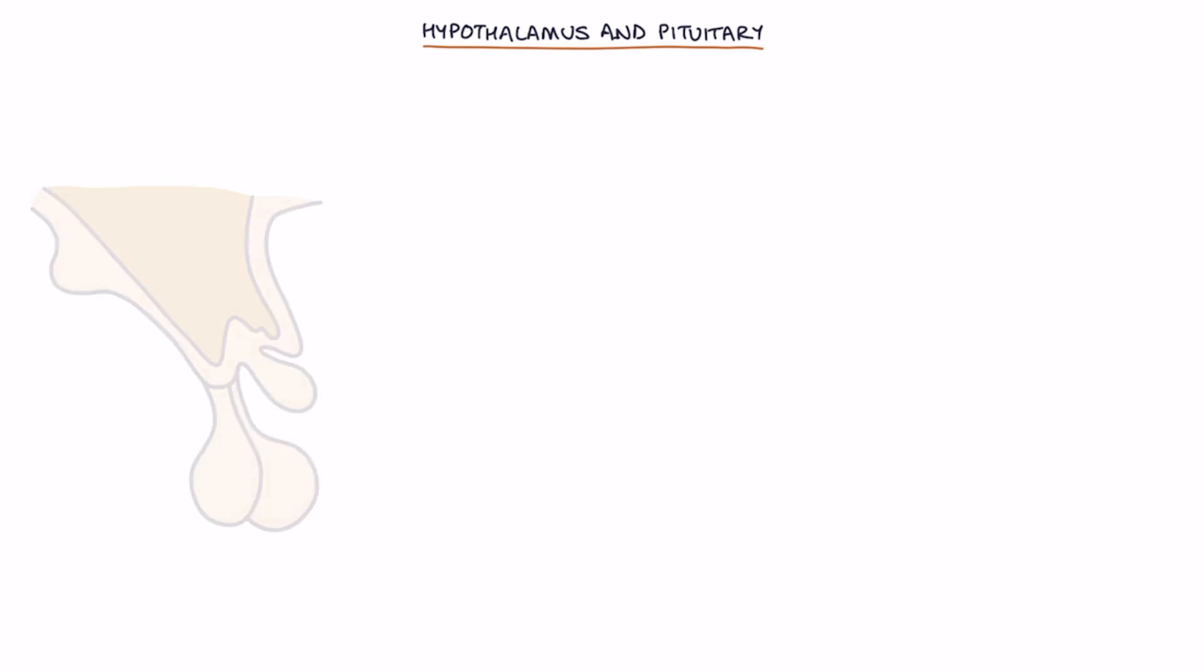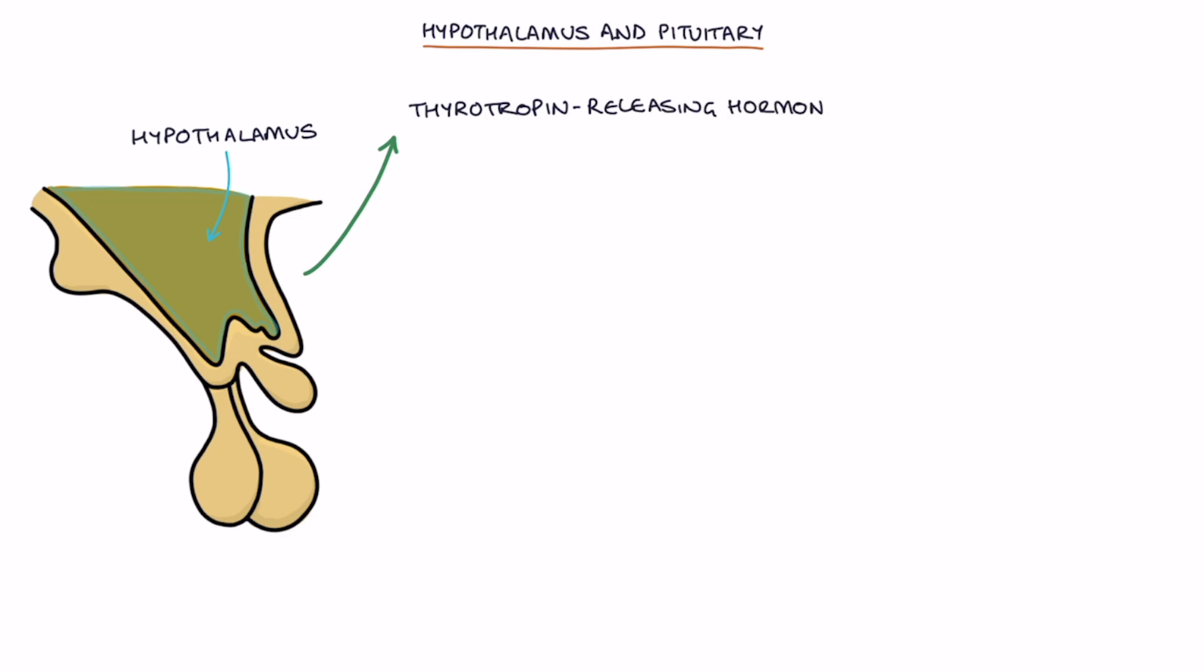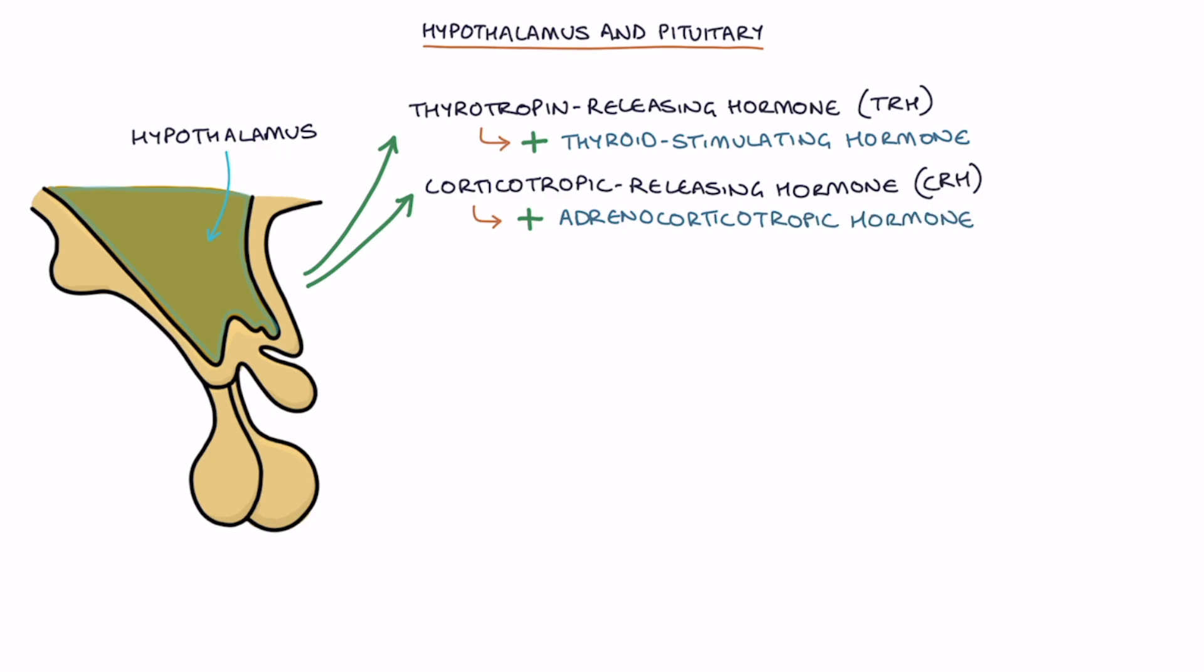Let's talk about the hormones of the hypothalamus. The hypothalamus releases thyrotropin-releasing hormone or TRH which stimulates thyroid-stimulating hormone secretion by the pituitary. Corticotropin-releasing hormone or CRH which stimulates adrenocorticotropic hormone secretion by the pituitary.